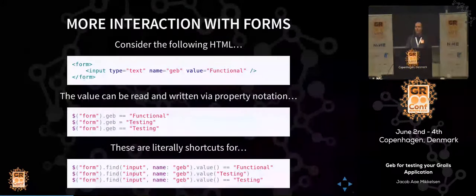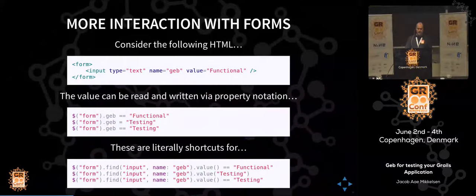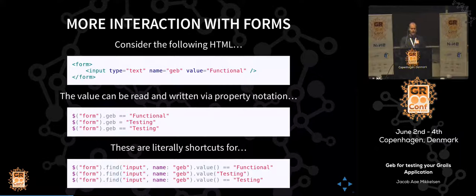Interacting with forms is very elegant. If we consider a form that's just an input with type text, name GEB, and a value, we can, if we select the form element, just go directly for the name. We can extract the value or set the value. These are literally just shortcuts for the more verbose code shown at the bottom of this slide.